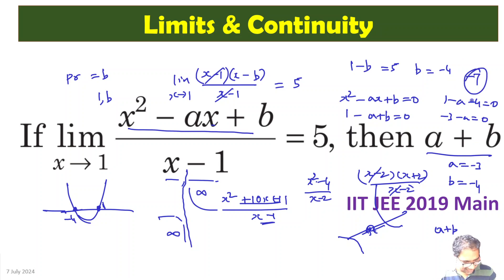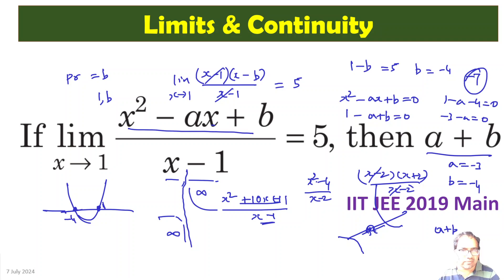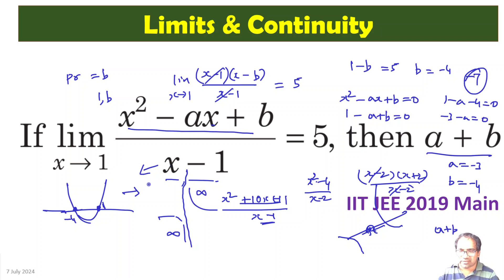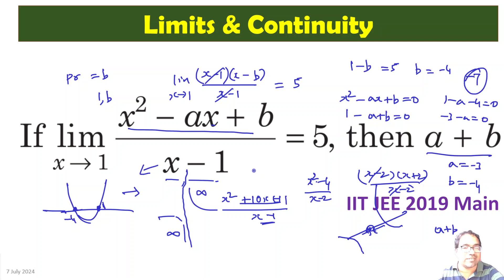So a + b = -3 + (-4) = -7. Minus 7 is the correct answer. The only important thing to note here is: when a limit exists, x - 1 must be a factor of the numerator. Otherwise the limit does not exist — approaching from the left gives minus infinity or plus infinity, and from the right gives the other infinity. That is how we solve this limit problem.